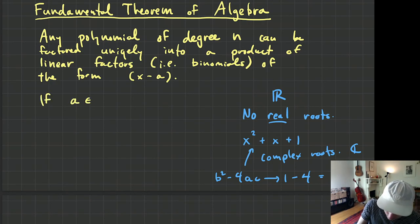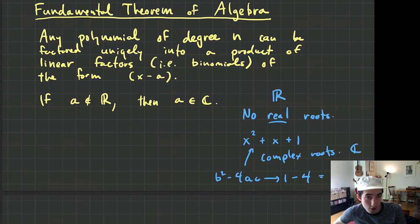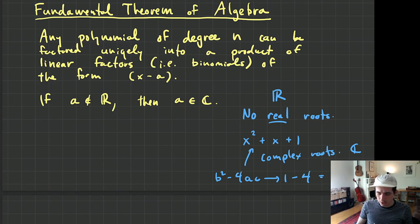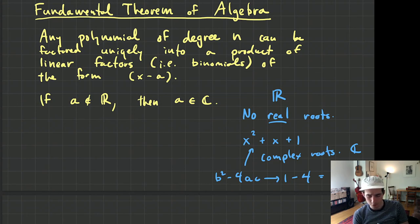That's what the Fundamental Theorem of Algebra tells us: even if you have a polynomial that does not factor in the real numbers, it will factor in the complex numbers. If a is not a real number, then a is a complex number. In fact it doesn't even matter — a will always be a complex number because all real numbers are actually complex numbers as well.